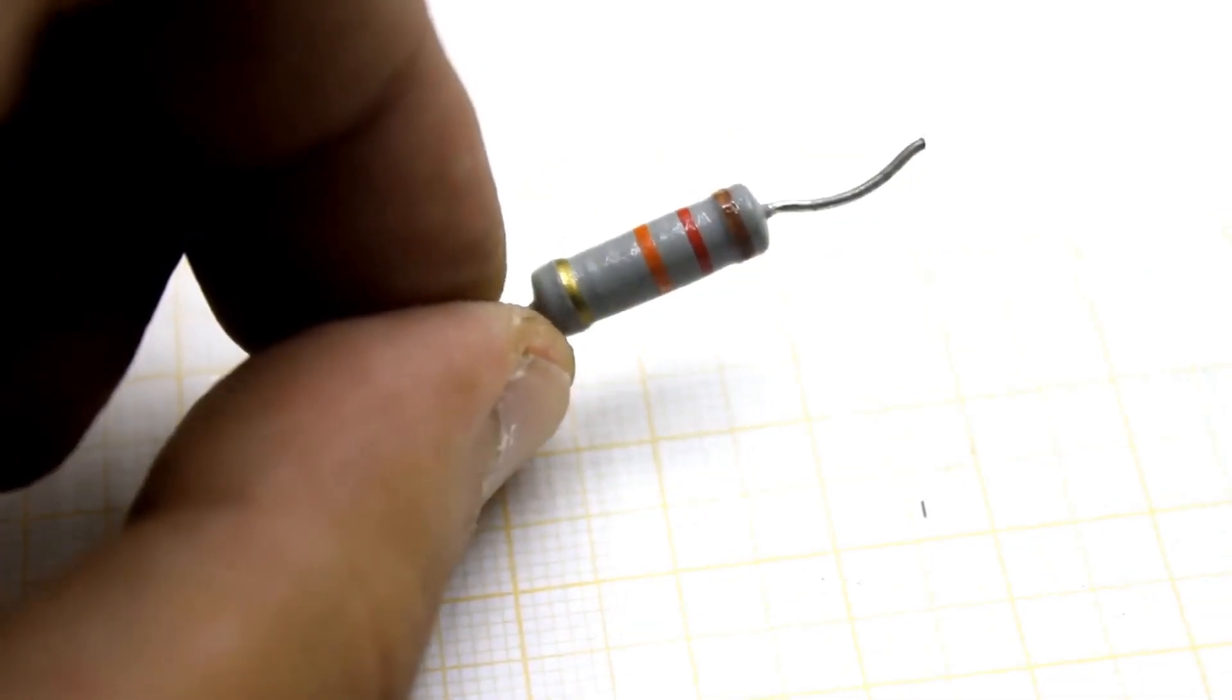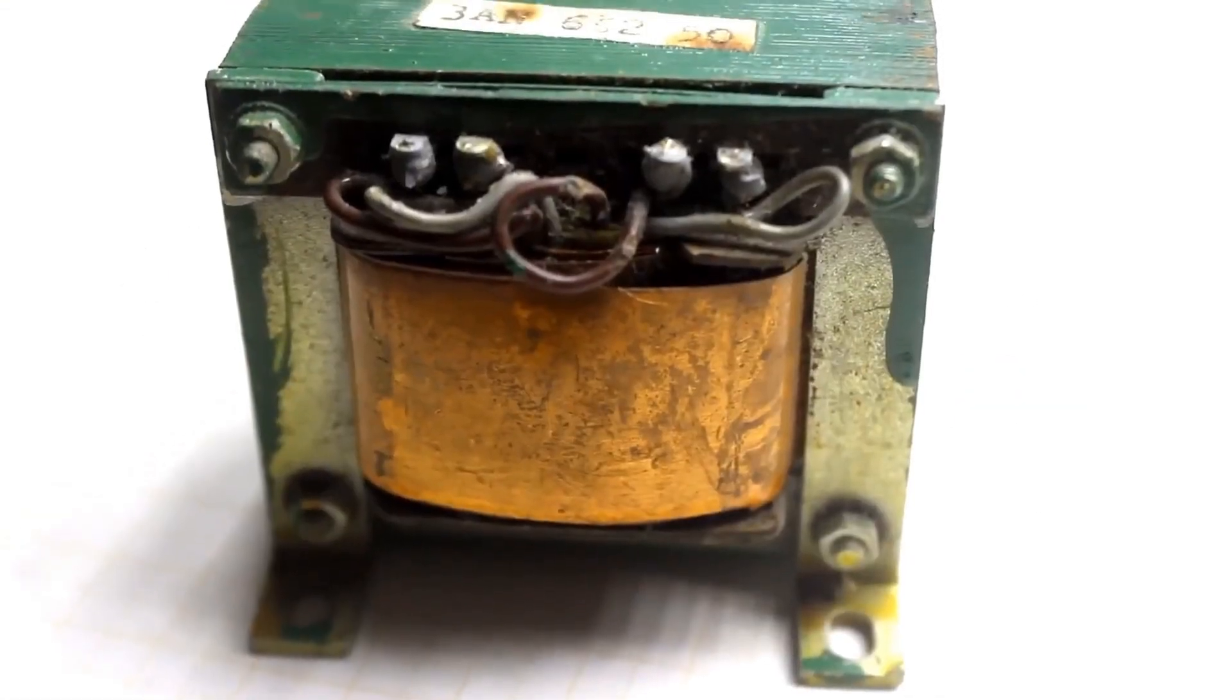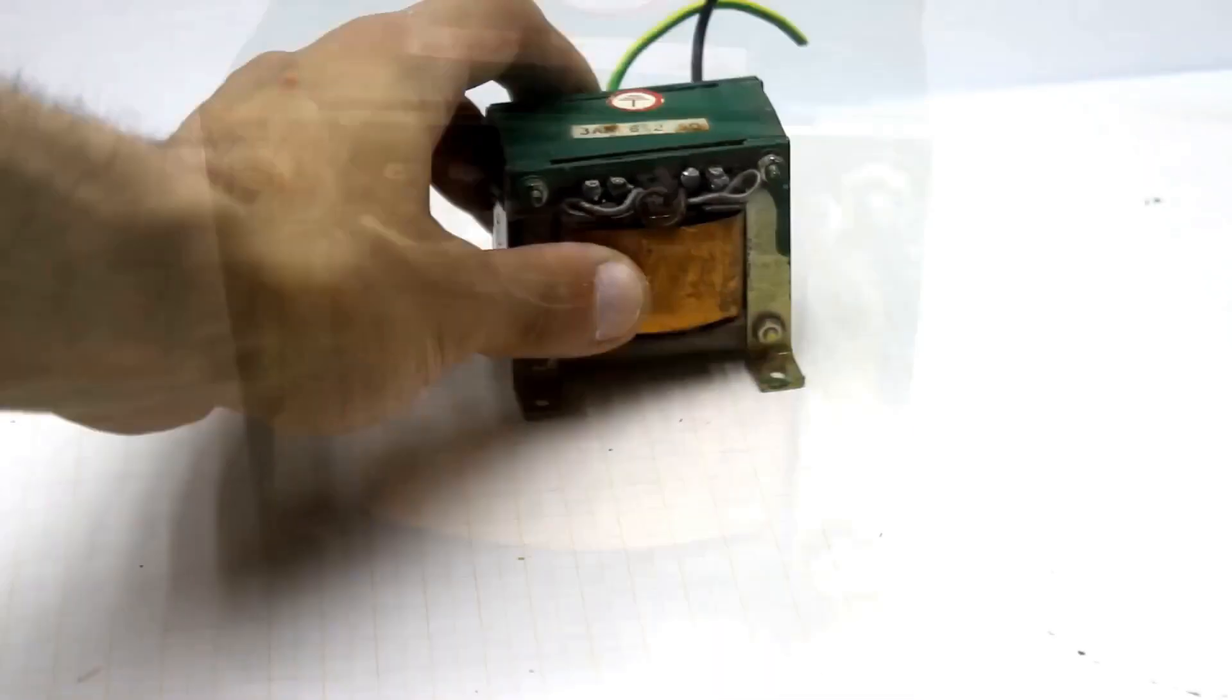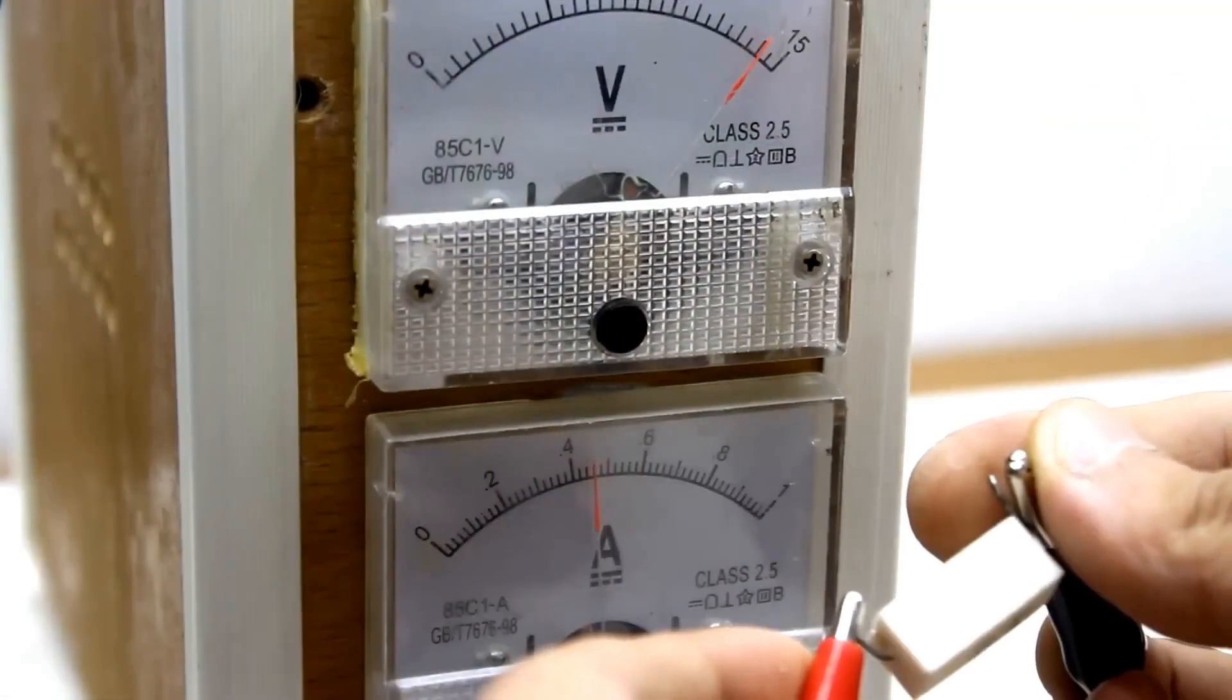The resistance of this resistor may deviate from the specified value by 30%. The transformer should provide at least 15 volts and 1 amp on the secondary winding. My version only outputs 500 mA, so the power supply is a bit weaker than I originally planned.